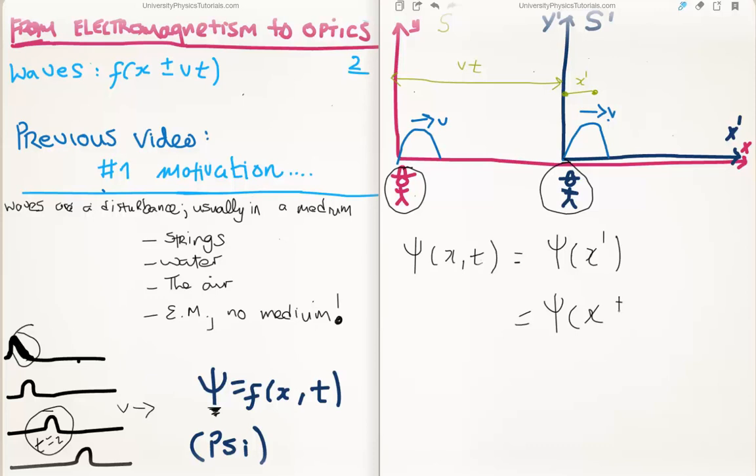So we of course know that we can rewrite this because we know what x prime is. So we get x plus or minus v times t like that. And I want to rewrite this because it's a function of v times t. So I'm actually going to write f like this. So I hope you can follow me so far. So we say that this is the most general form of the one dimensional wave equation.